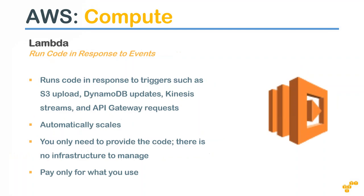Lambda is a completely serverless architecture that Amazon provides. Typically in any server there is application code that runs some processing - adding numbers, resizing an image, converting a video format, or processing a CSV file into a graph. Instead of running a full server and running code only when demand comes, Lambda gets triggered whenever you need it and shuts down automatically when the processing is completed.